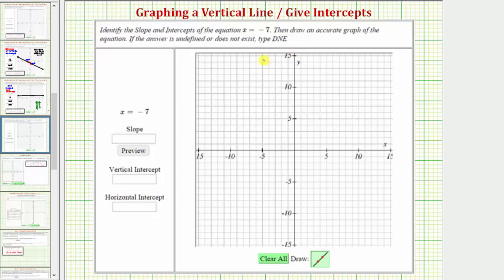If we don't recognize right away what kind of line this would be, we can always make a table of values. So let's go ahead and do that.